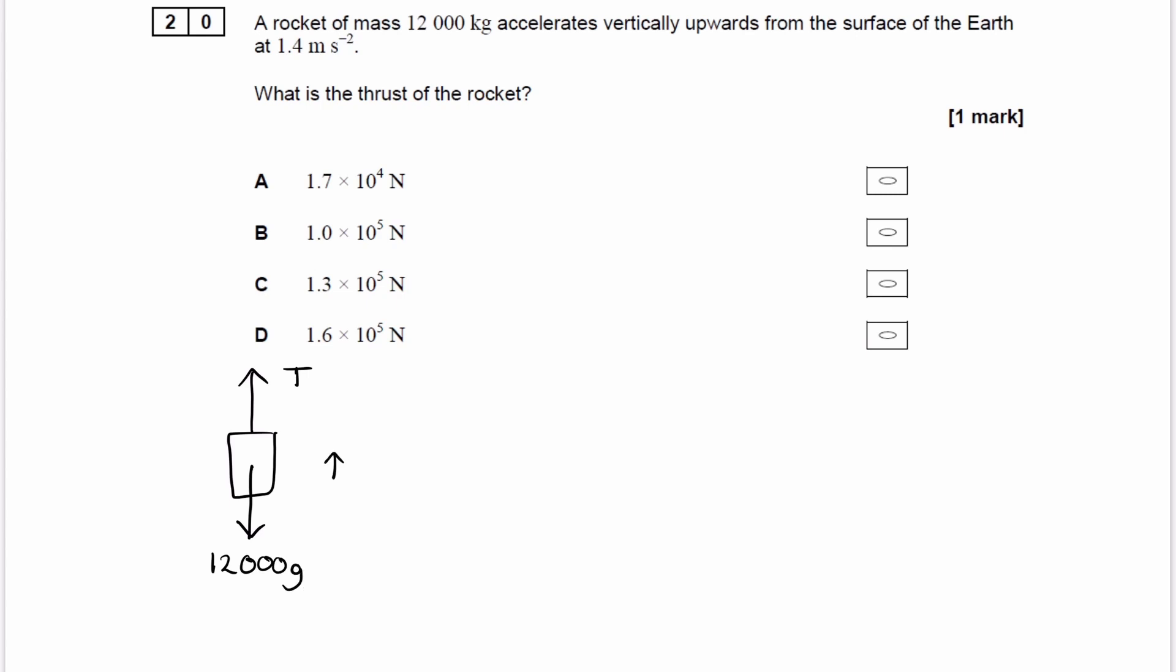We know the rocket is accelerating upwards with a value of 1.4 meters per second squared. So the resultant force is not the thrust force. The resultant force will be a combination of these two. We know the object is accelerating upwards, and therefore the resultant force will also be upwards. And that resultant force would be T minus 12,000g. If that's the resultant upwards force, it's this that is then equal to ma.